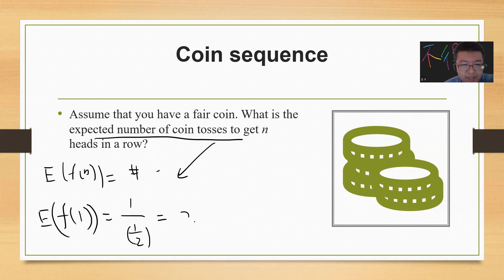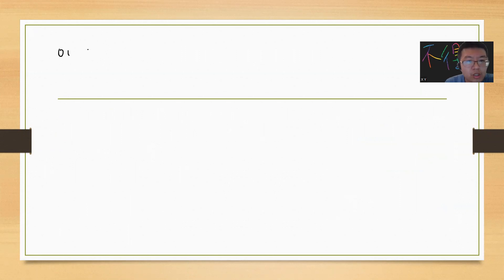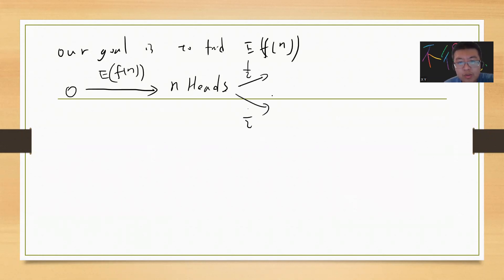Our goal is to find E(n). Let's do this. Suppose you start from zero, and after expectation value E(n), you arrive at n heads. Now you have two possibilities. Maybe you're lucky and you get another heads. Otherwise, you get a tail, which means you need to go back again.